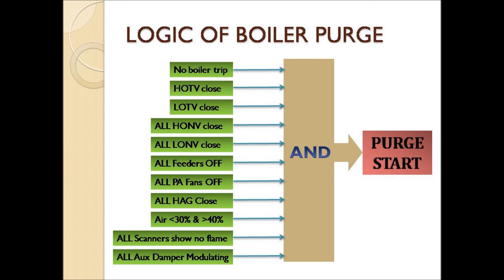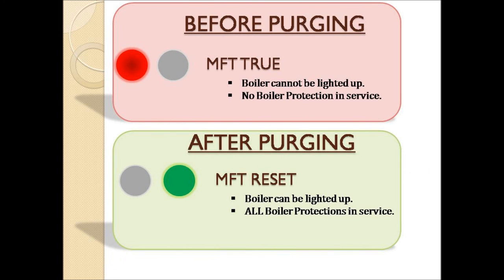In case of a purge interrupt, we have to find out the condition due to which this interruption occurred. After finding out the cause, we have to clear it and normalize all the systems. Then again we can start the purge from the point it was stopped.